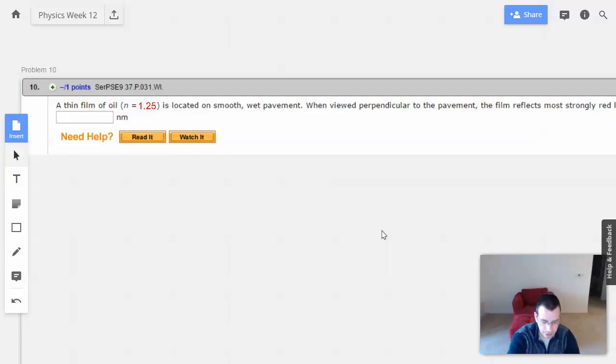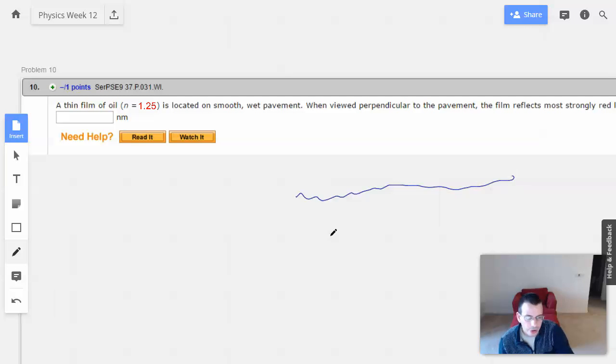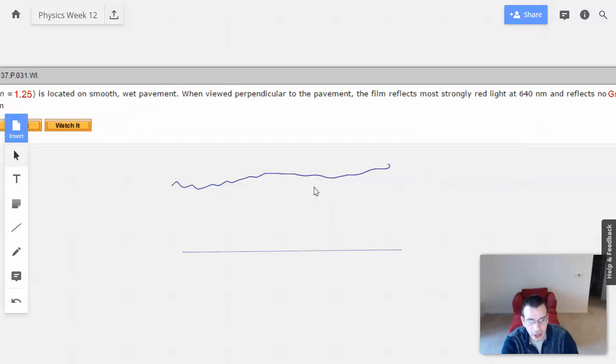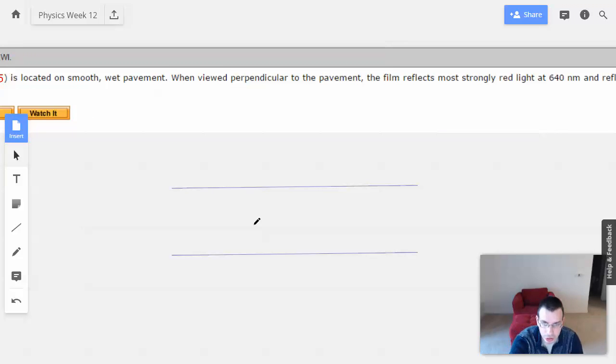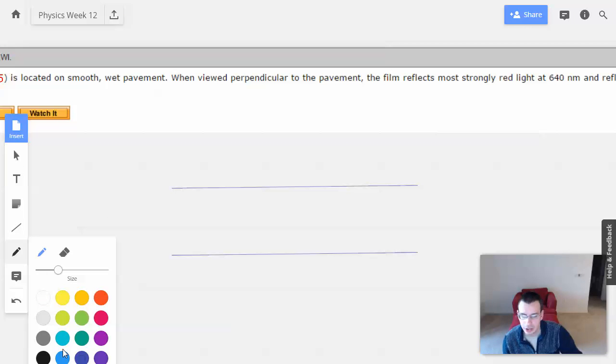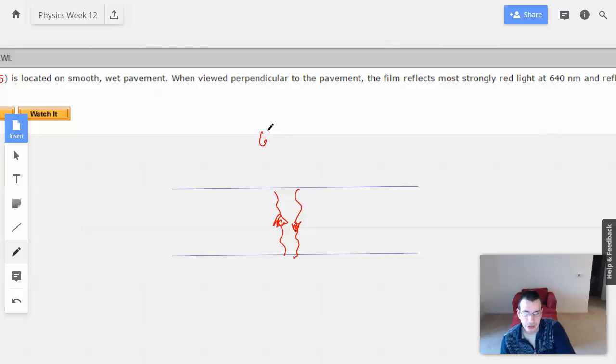Alright, so draw a picture. We have oil, which is actually flat. I just drew it all curvy because I'm a terrible artist. And then we have the smooth pavement below it. So the idea here is we have red light where red comes down, hits the ground, comes back up. Down, up. And this is completely reflected. So that's 640 nanometers before it gets into the oil.